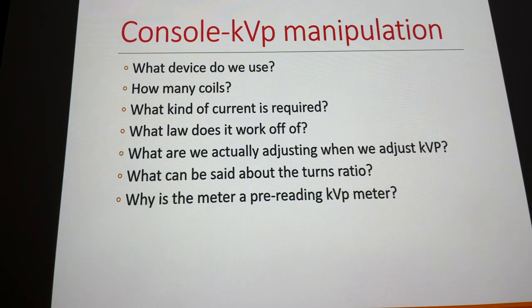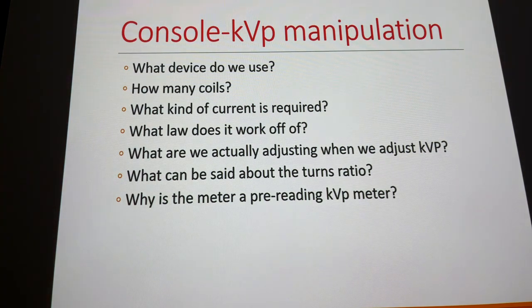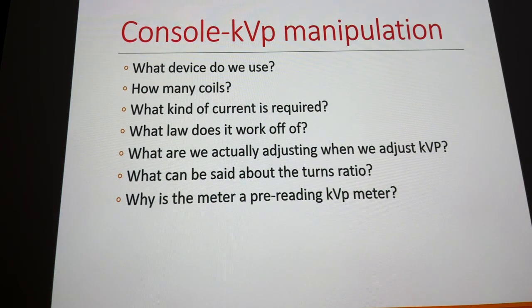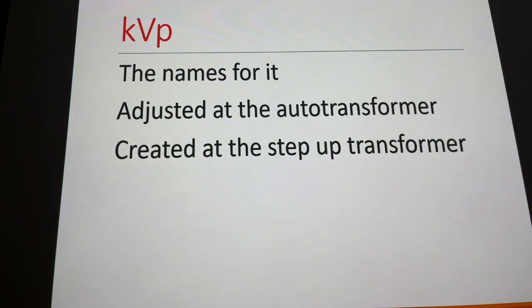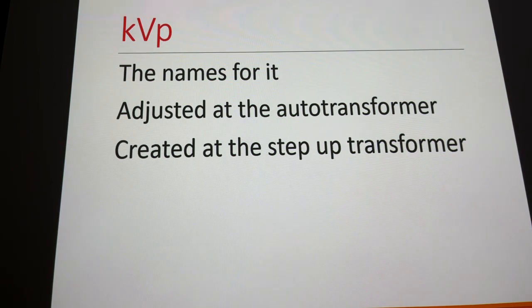We detect how much voltage we're actually using with a pre-reading KVP meter. It's called a pre-reading KVP meter because we don't have KVP yet — we're just using voltage. Since we have a set turns ratio on the high voltage transformer, if the voltage is correct on the auto transformer, we know it will be right once it passes through and becomes KVP. KVP — also called potential difference, electric potential — is adjusted at the auto transformer but not created until the high voltage transformer.